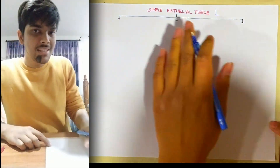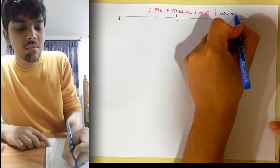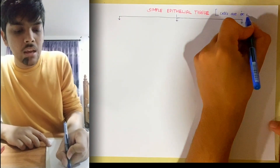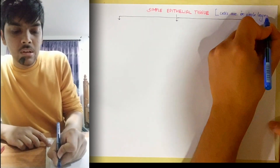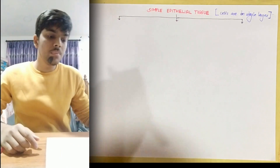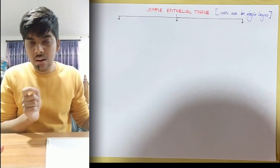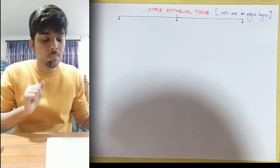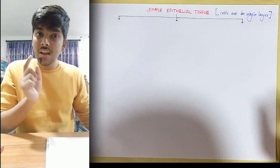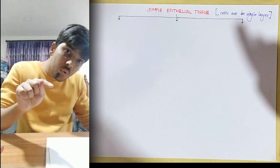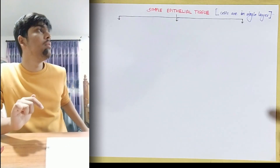Simple epithelial tissue — the name suggests itself. 'Simple' meaning cells are in a single layer, that's why it has been given this name. So simple epithelial tissue is that epithelial tissue in which cells are arranged in a single layer. But on the basis of the type of cell present in that simple epithelial tissue, it can further be categorized into three different types.